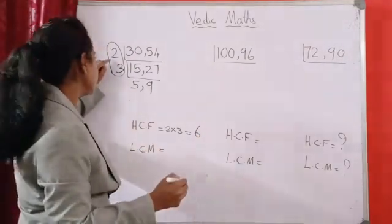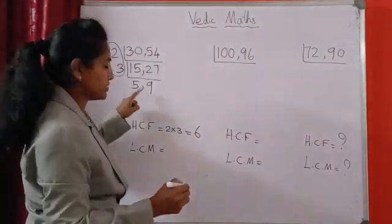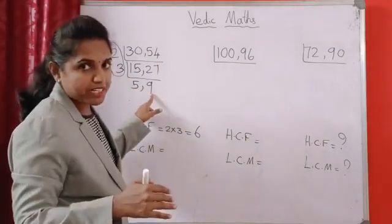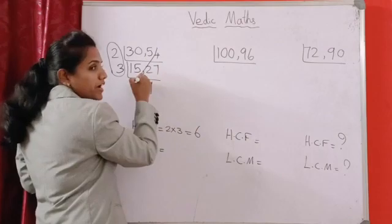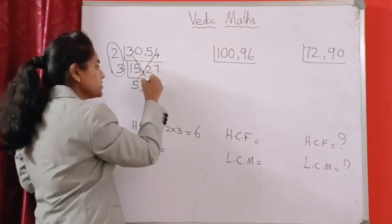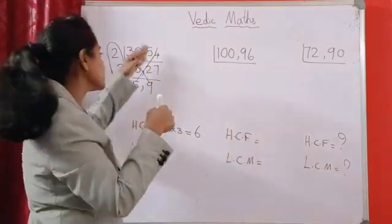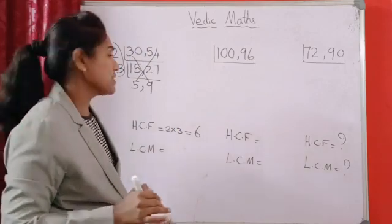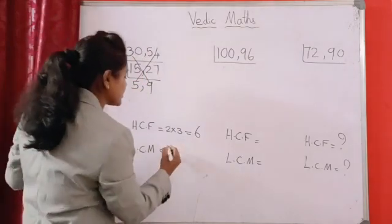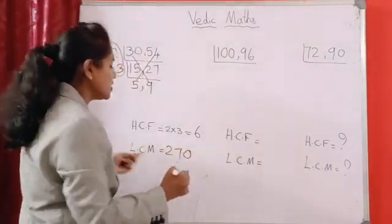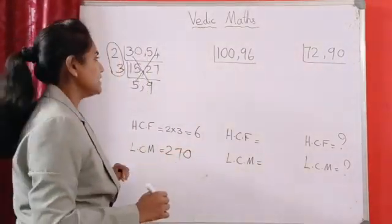LCM, usually we will multiply 2 into 3 into 5 into 9 but that's taking more time, right? So, one more shortcut you can multiply 54 into 5 or 30 into 9, cross multiplication. Whether this or this, answer should be same. So, I can multiply 30 into 9, very easy because here 0 is here, 3 times 9 is 27, then 10. 270 is my LCM.